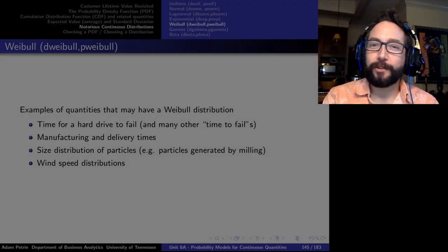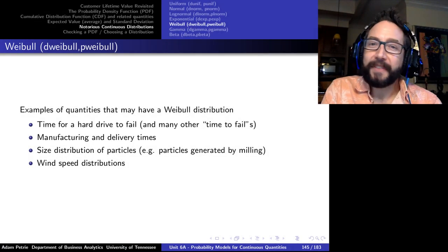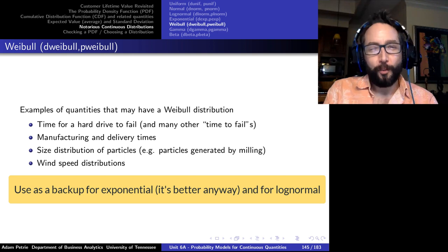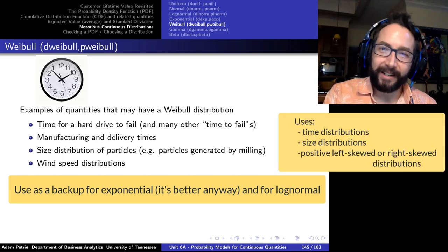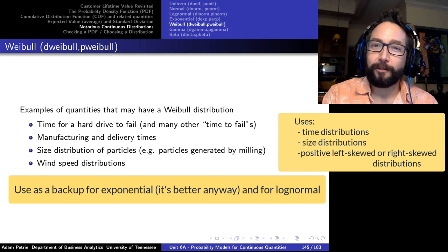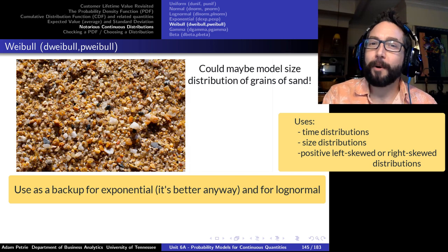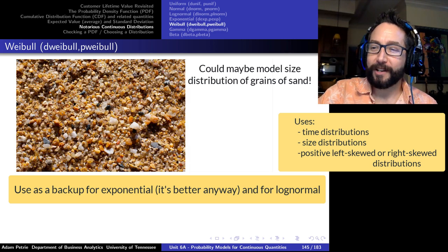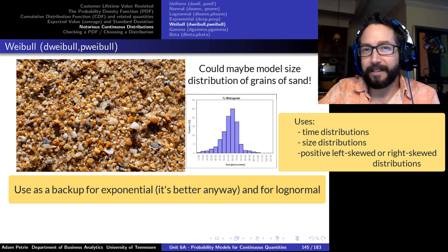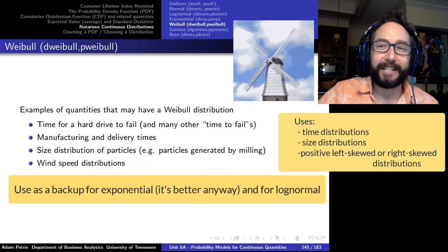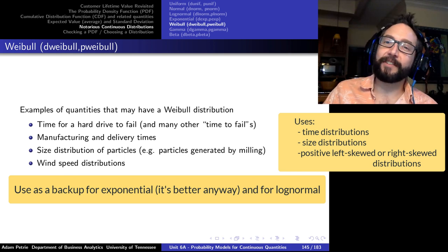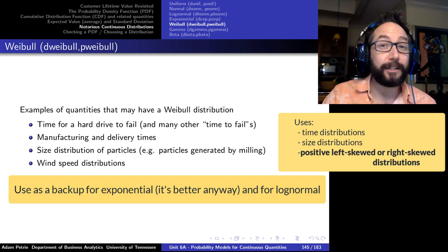The Weibull is used wherever the exponential is designed to measure: waiting times, processing times, manufacturing times, delivery times. People also use it to describe the size distribution of particles when milling flour or similar processes, and for wind speed distributions. It's appealing because it can give a left skew, right skew, or roughly symmetric shape — a pretty flexible distribution. If the exponential doesn't work, try the Weibull.